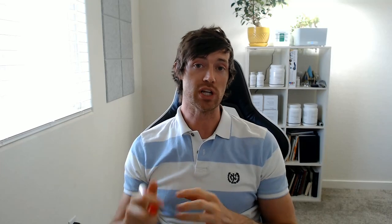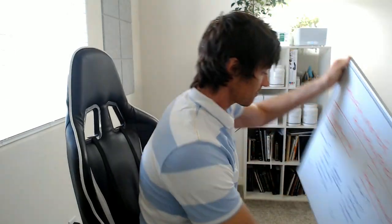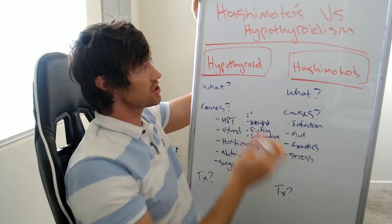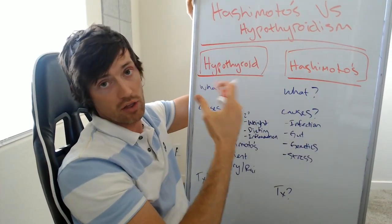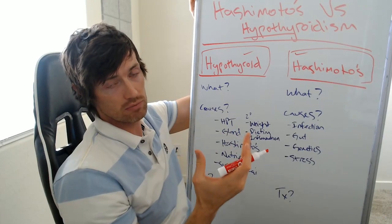Hey guys, it's Dr. Childs here, and today we're going to be discussing the difference between two thyroid conditions. One is Hashimoto's thyroiditis, sometimes referred to as Hashimoto's hypothyroidism, and also hypothyroidism by itself, or having a low thyroid. We're going to be discussing the differences between these two conditions, why it matters, what causes them, how they're treated. I'm an internist, and I specialize in treating people with thyroid problems, helping people with hormone imbalances, and helping people lose weight. Let me get out this board here and we'll talk about the difference between Hashimoto's hypothyroidism and hypothyroidism.